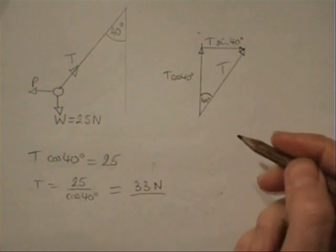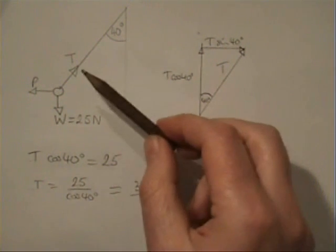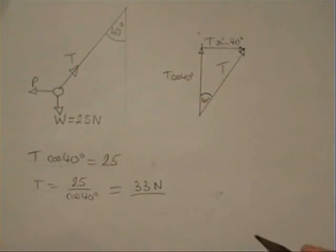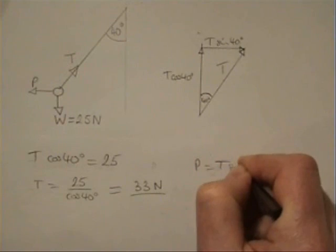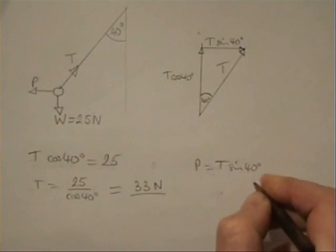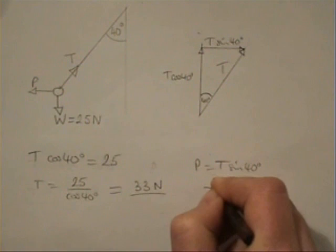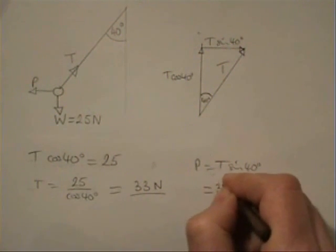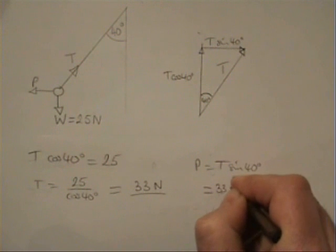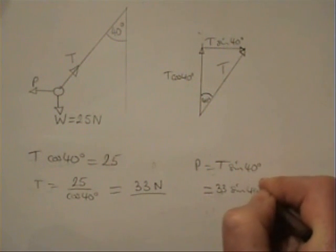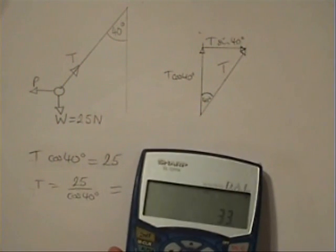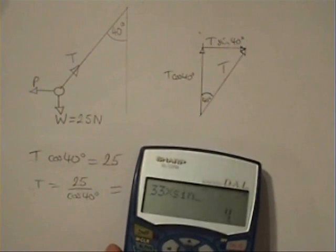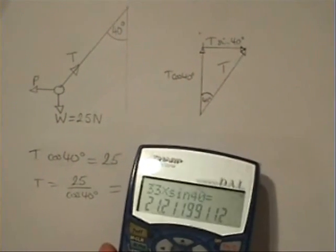And to find P, we know that the horizontal component of the tension must equal P. So it's in equilibrium horizontally. So therefore, P equals T sine of 40 degrees, which is 33 times the sine of 40 degrees, and equal to 21 newtons.